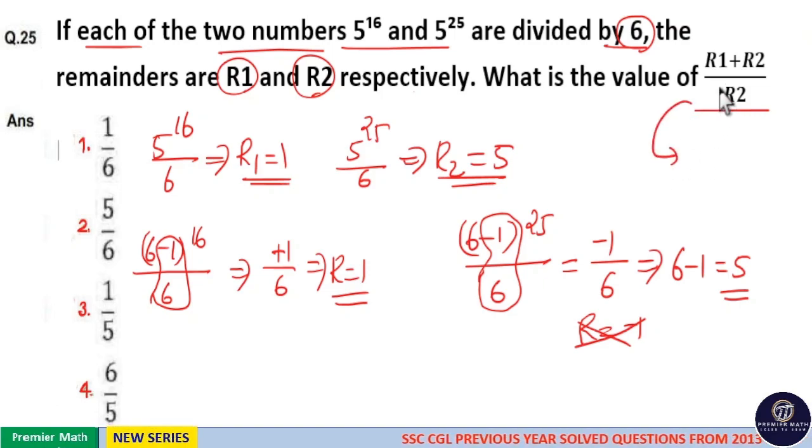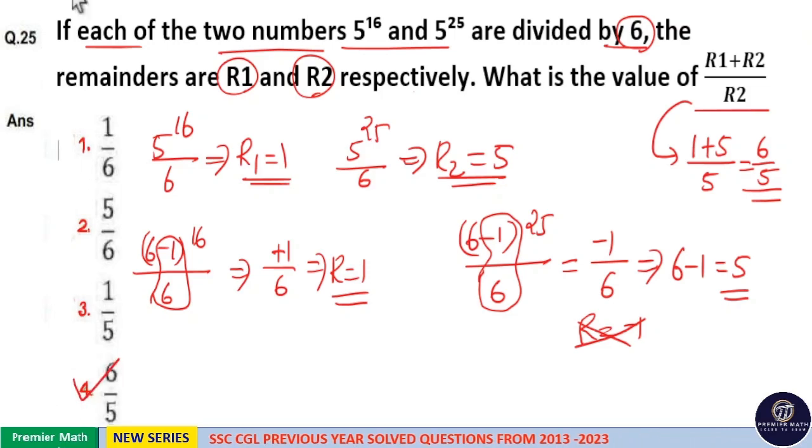So R1 plus R2 by R2 is equal to R1 is 1, R2 is 5 divided by 5. So 6 by 5 is your answer. Option 4 is your answer.